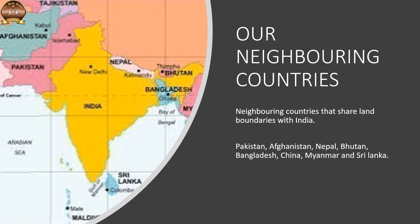Hello children, now we will see our neighboring countries. Neighboring countries that share land boundaries with India are Pakistan, Afghanistan, Nepal, Bhutan, Bangladesh, China, Myanmar and Sri Lanka.